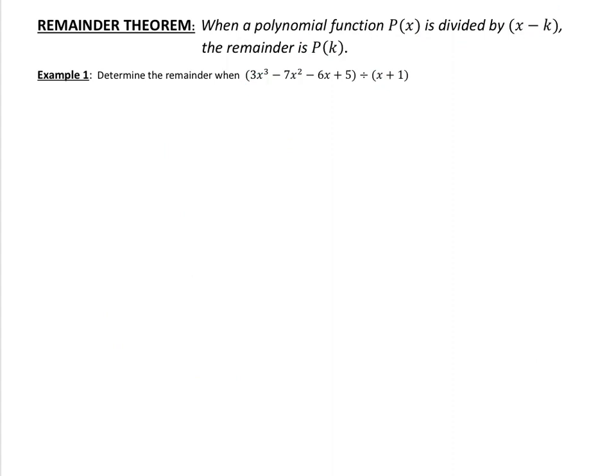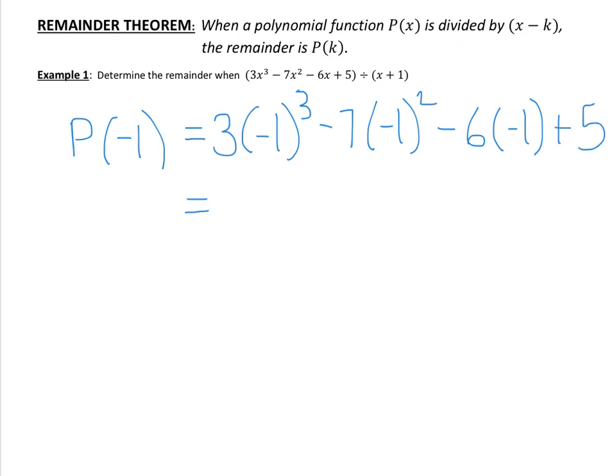So our solution simply looks like this. We would find the remainder by taking the polynomial evaluated at negative 1. And, of course, that means we're just going to sub in negative 1 everywhere we see an x. You've done this many times by now. So 3 times negative 1 cubed minus 7 times negative 1 squared minus 6 times negative 1 plus 5. And you can go ahead and evaluate that, and you should be able to see that we get 1 when you substitute that in. So this means that the remainder is 1.